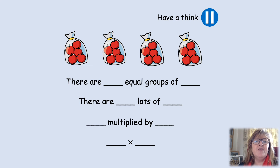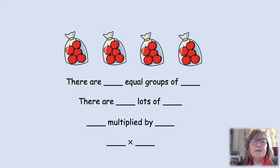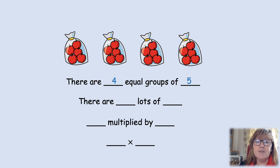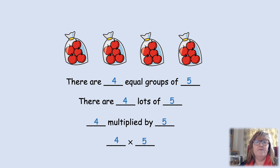Let's have a look at this one. On your whiteboard or your paper, could you fill in the answers? Pause the video while you do it. How did you get on? First of all, we need to count how many groups there are: one, two, three, four. And then how many in each group? Five apples in each bag. So I've got four equal groups of five. I can say that's four lots of five. I can also say that's four multiplied by five. Four times five. Well done — did you get that?